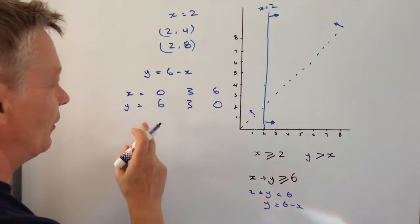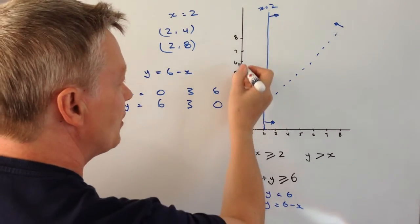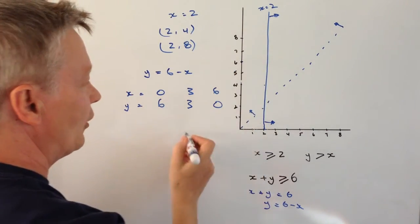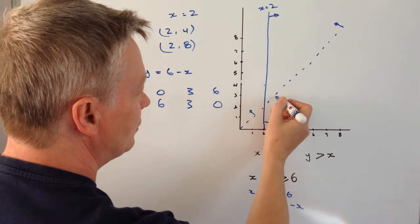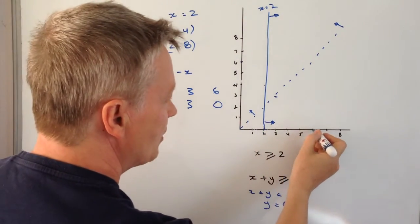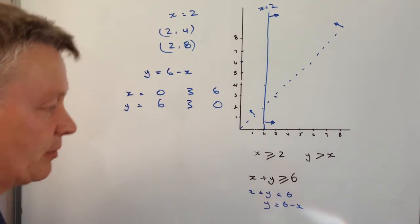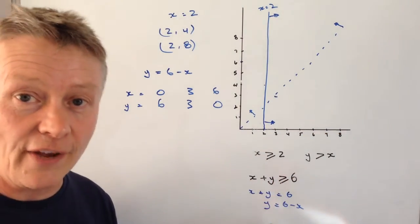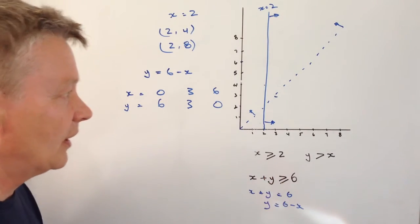Going to plot those particular points. I've got 0, 6, which is up here. I've got 3, 3, which is about around about there. And I've got 6, 0, which is about there. Now, it's also, as I mentioned before, it's equal to. So therefore, I'm going to make that a solid line.